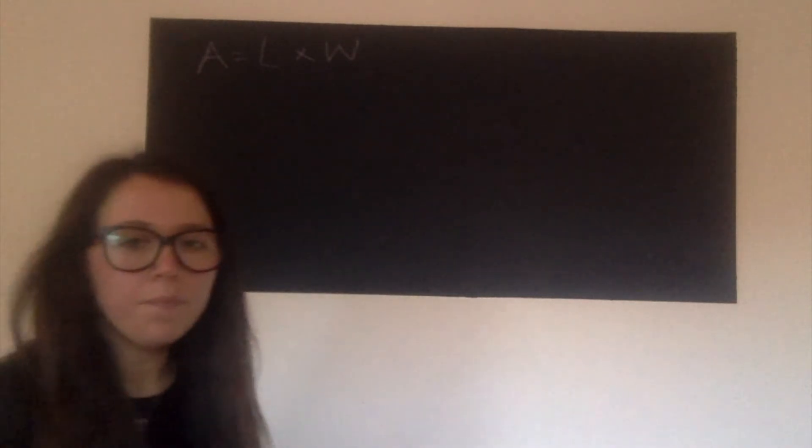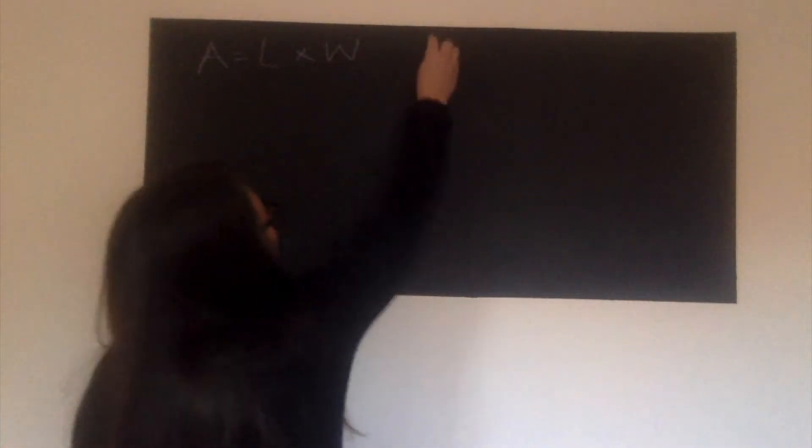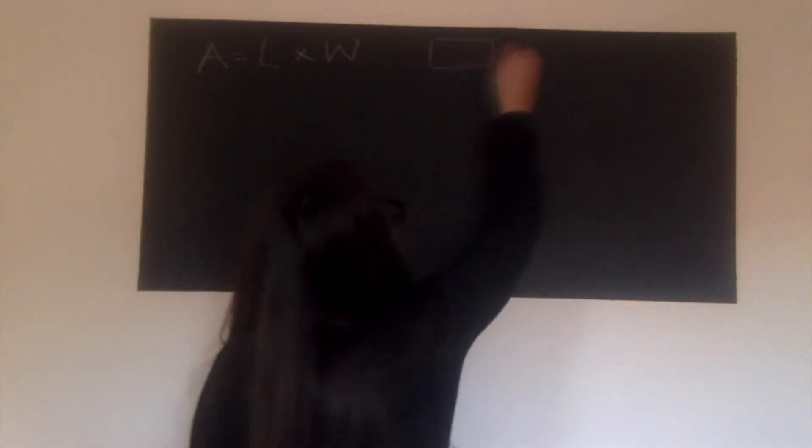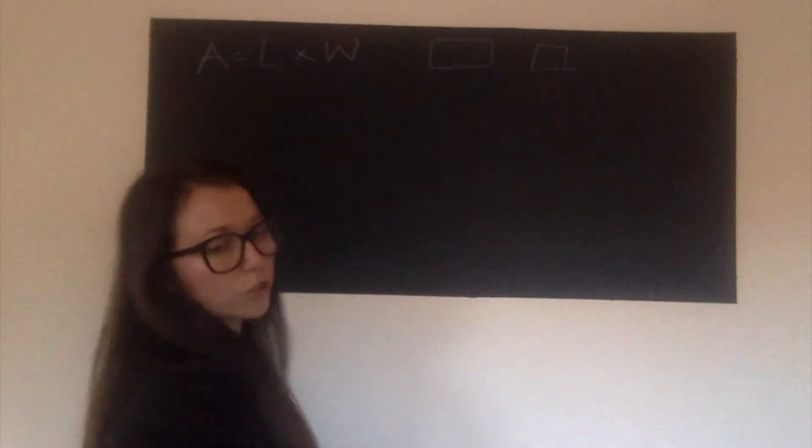So today we're looking at area. Now, previously, when we looked at area, we think about squares and rectangles. We know the formula for that is the area equals the length times by the width, or length times by height. Now today is slightly different. So this is for our rectangles and squares. Today we are looking at the area of triangles.